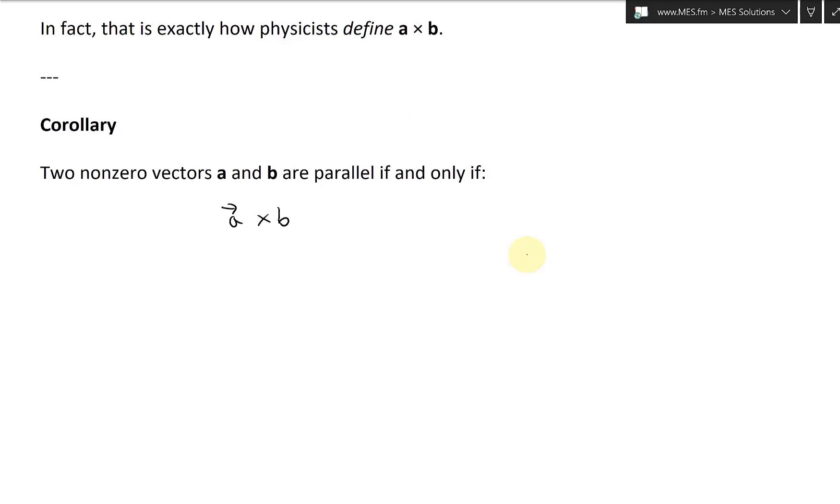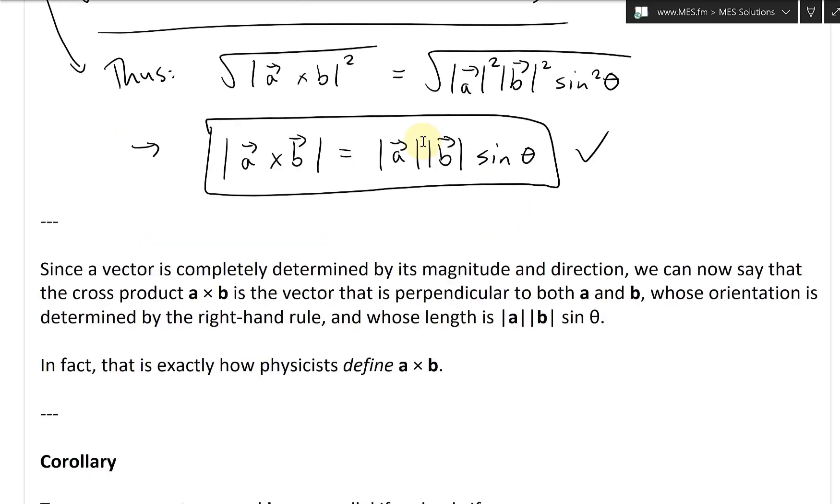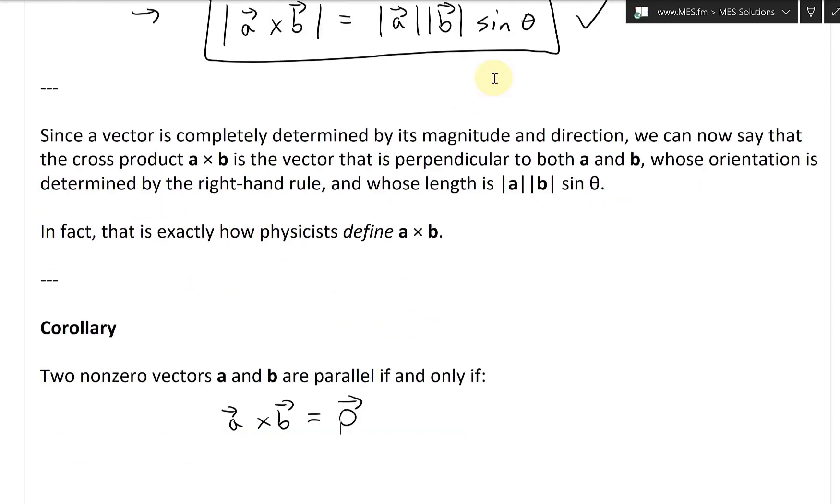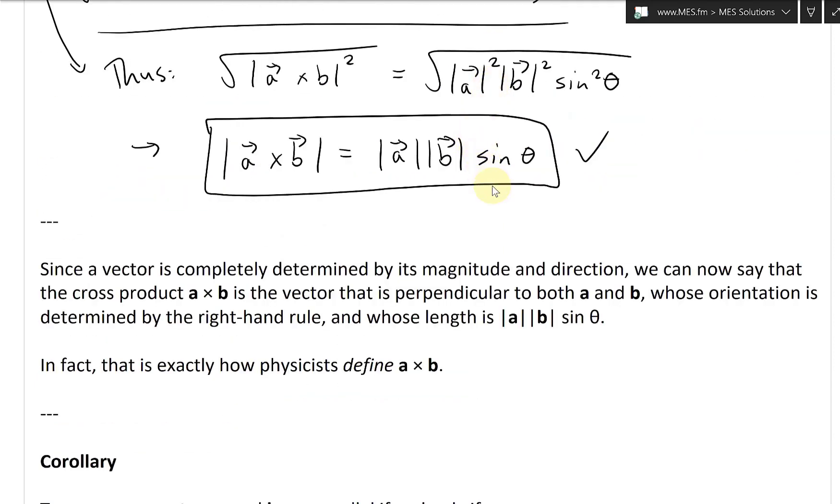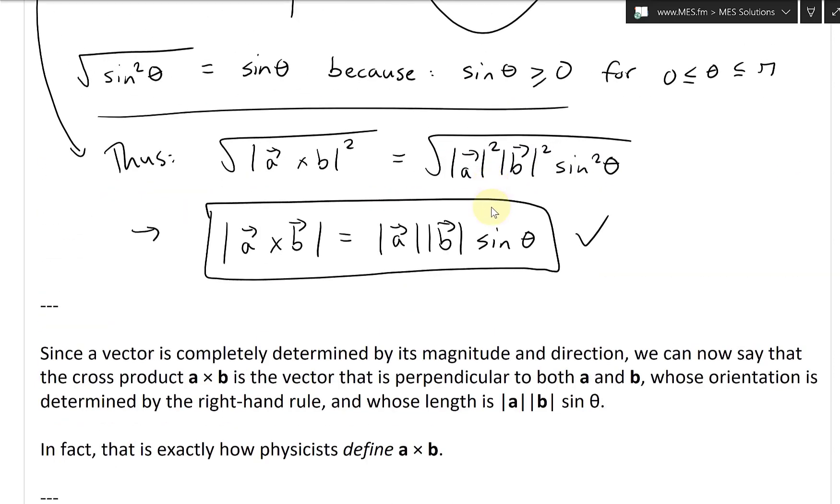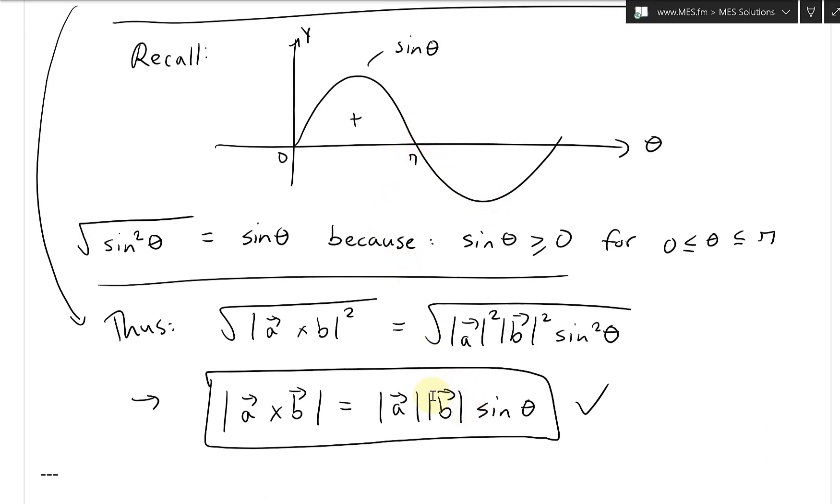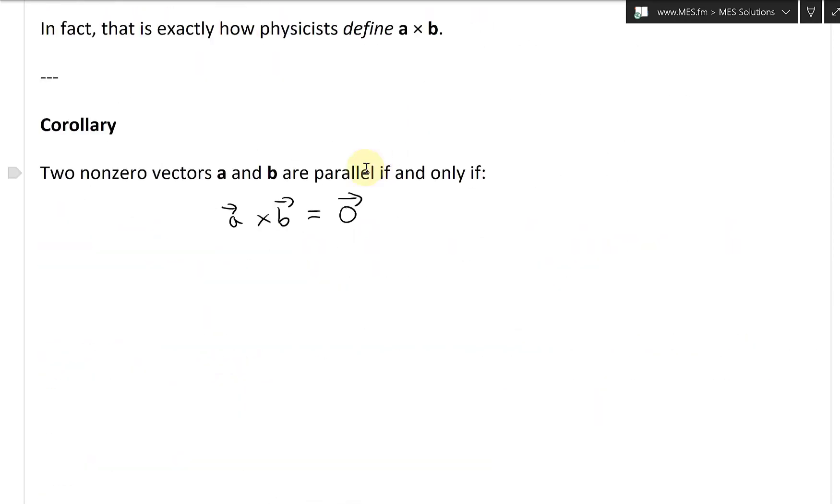So A cross B equals the zero vector like that. And again, this corresponds to this sine right here. Because when sine is zero or sine is π or 180 degrees, that becomes zero. So this whole thing becomes zero. In other words, it has to be parallel. And we will illustrate that soon.